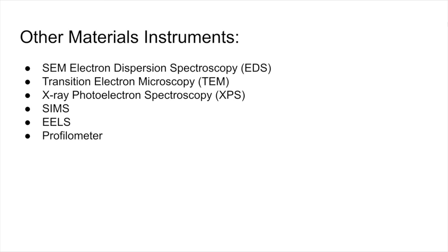You can also look at transmission electron microscopy (TEM) for atomic-level imaging, as well as X-ray photoelectron spectroscopy (XPS) to understand composition, SIMS, EELS, and profilometry to determine thickness of different material samples. For electronic devices specifically, you can use a four-point probe to understand the Hall effect, mobility, and conductivity. There are different material instruments available for different material properties and characterization needs.